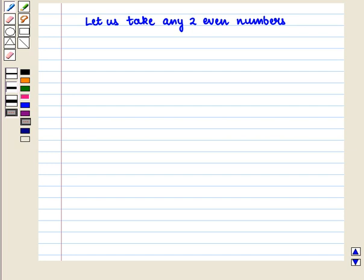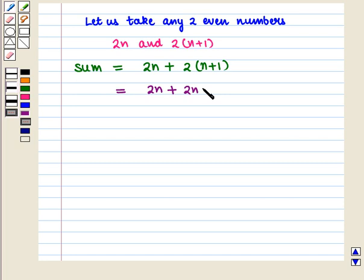Let us take any two even numbers, say, 2n and 2(n+1). Now we find their sum and it is given by 2n plus 2(n+1). And it is equal to 2n plus 2n plus 2.